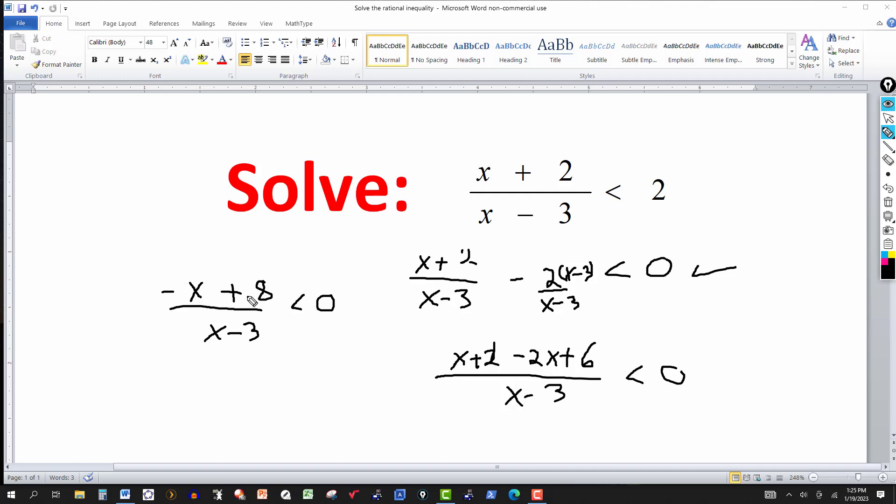That is, any number that makes the numerator zero, any number that makes the denominator zero. You can see that minus x plus 8 is 0 when x is 8 - minus 8 plus 8 is 0. And of course, x minus 3 is 0 when x is 3.